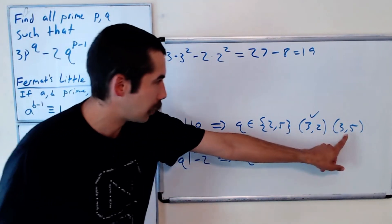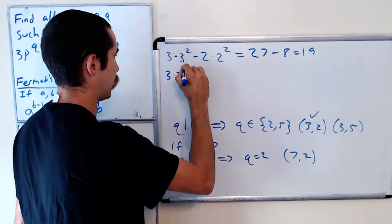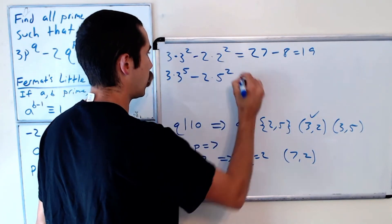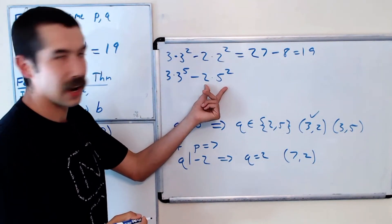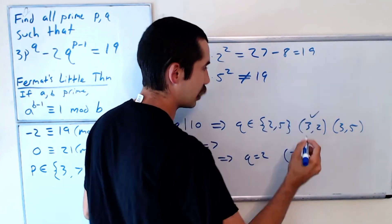We'll do the same thing with (3,5). So 3 times 3^5 minus 2 times 5^3. This is a really big number and this is not as big of a number, so this is not equal to 19. You could check that on your own. So this is not an answer.